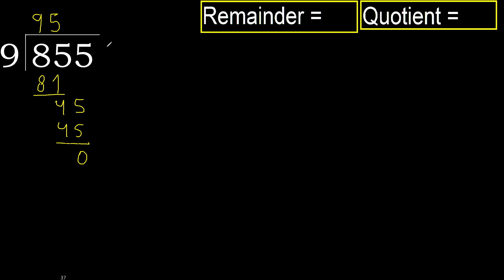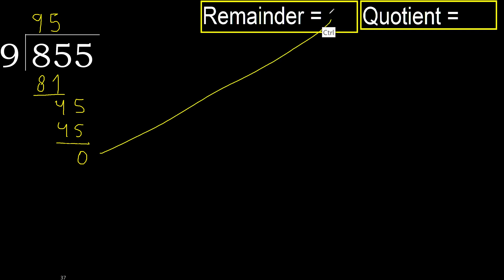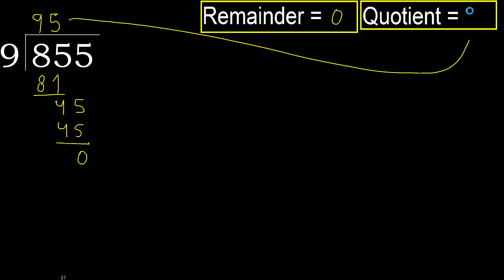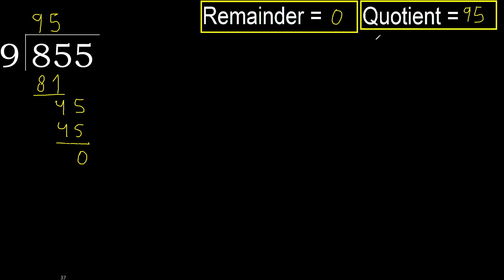Next, there is no number, therefore finish it. 855 divided by 9 is 95.